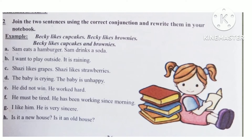For example: Becky likes cupcakes. Becky likes brownies. As you can see, there are the same ideas, so we join these two sentences using the conjunction AND. Answer: Becky likes cupcakes and brownies.